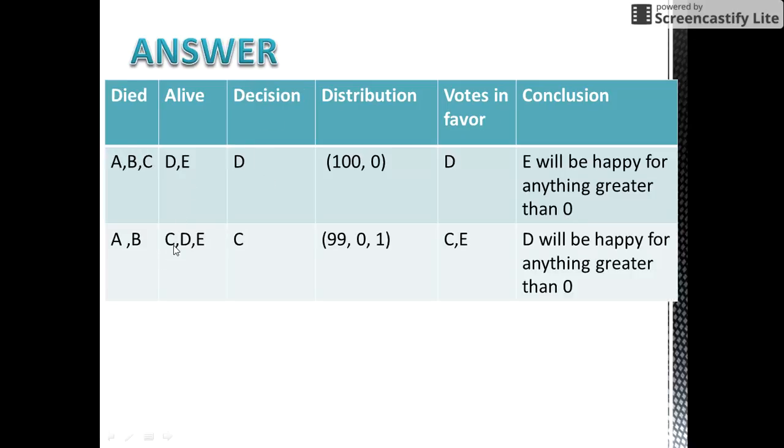Let us suppose now that A and B died since their proposals failed. Now C gives a proposal to distribute the coins in such a way that C gets 99 coins, D gets 0, and E gets 1. Now the proposal of C would pass since C and E would vote in favor of the proposal, as E would be happy to get 1 gold coin instead of 0 in the previous case.